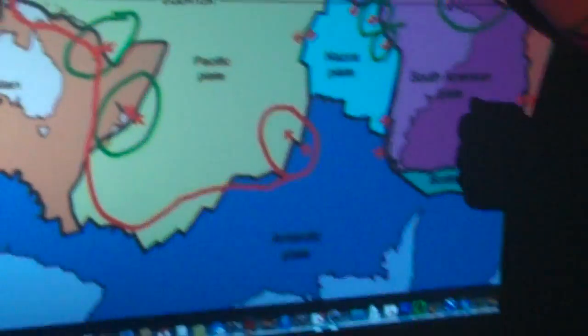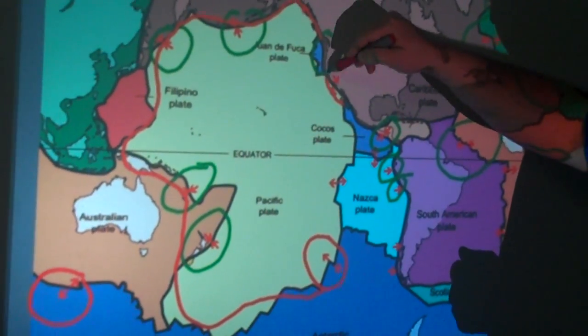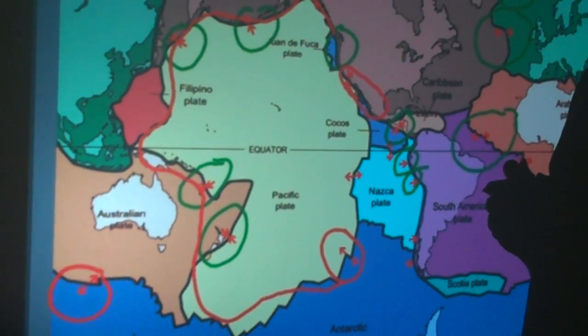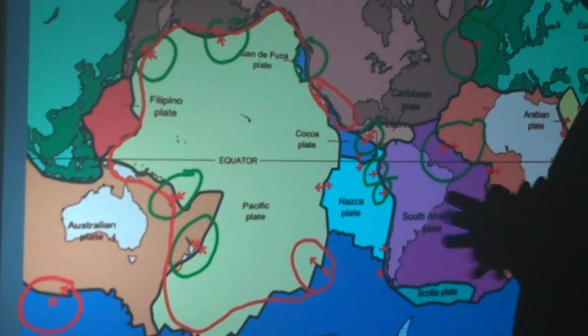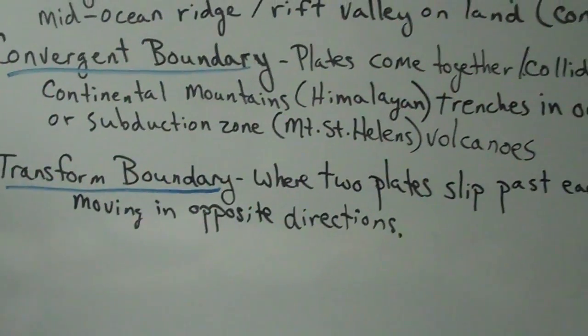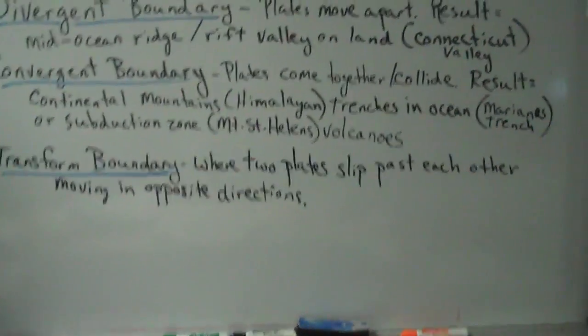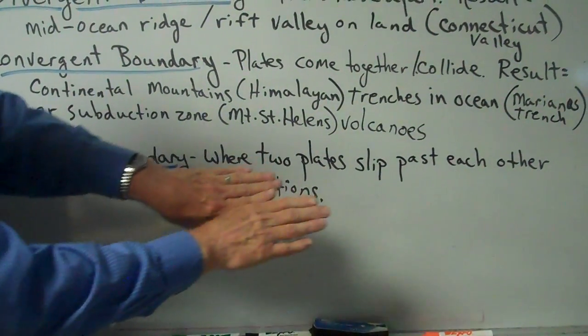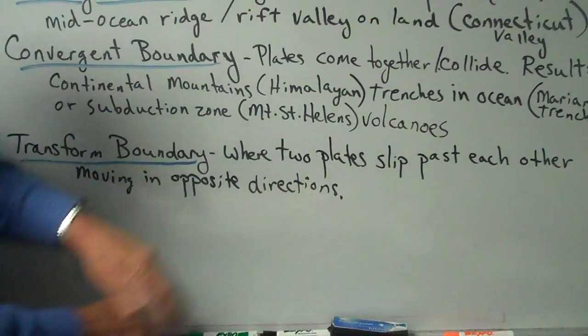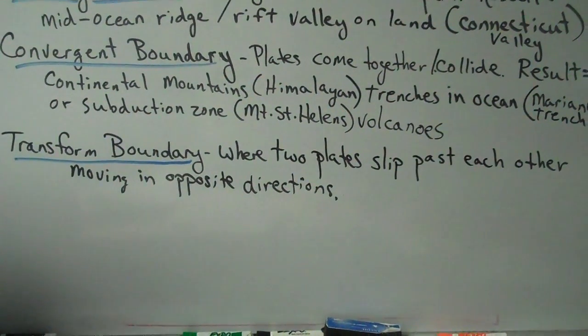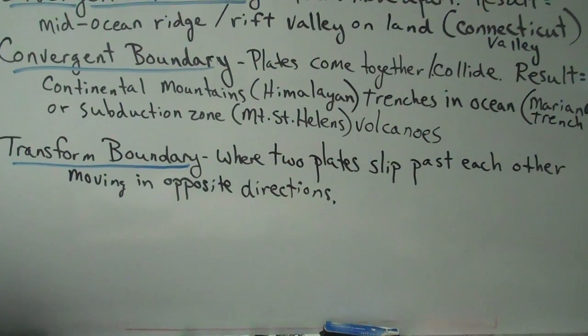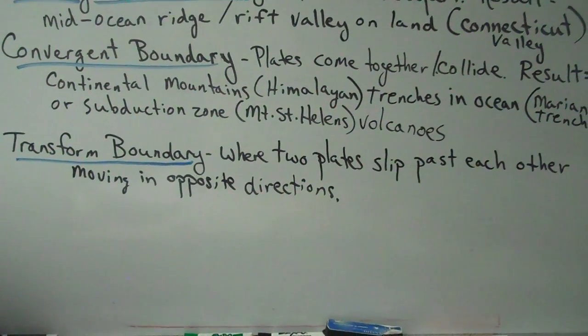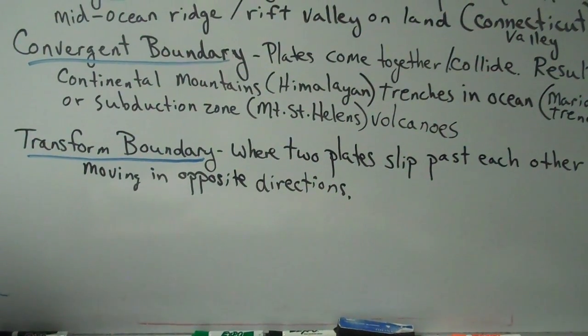Now here you don't really have a lot of volcanic activity, but you get a lot of earthquakes in California. That's because of the third type of plate boundary, which is a transform boundary. What happens there is that the plates actually slide past each other in opposite directions. You get a rubbing motion and a lot of earthquake activity. In transform boundaries, the only real thing that happens is earthquakes — but they can be very powerful.